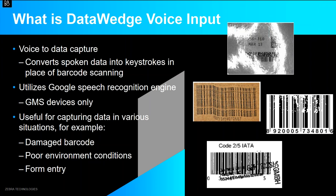As part of Zebra Mobility DNA, we are providing a new feature to easily and quickly add voice support for any app called DataWedge Voice Input. This voice input feature converts spoken data into keystrokes. Rather than acquiring data from a barcode scan, it receives data via voice and outputs the spoken data as text, replacing the barcode scan as the input. This feature is supported on GMS devices only, since it relies on the Google Speech Recognition Engine.